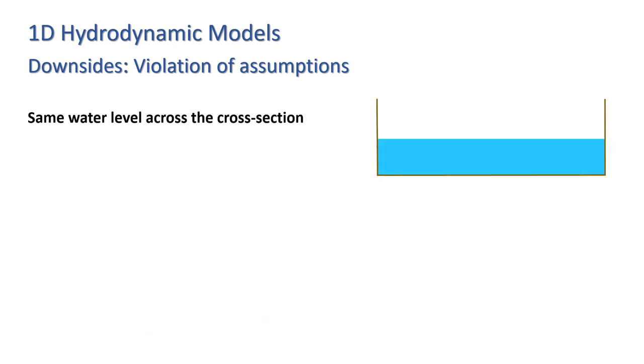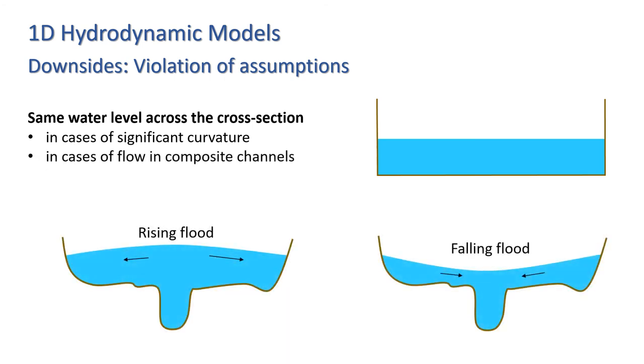Second, we have the assumption of a constant water level across the cross section. This assumption breaks down in a number of circumstances. For example, in cases of significant curvature, in cases of flowing composite channels. Here we see a couple of examples illustrated, a rising flood and a falling flood, where there's a clear difference in water level across the cross section.